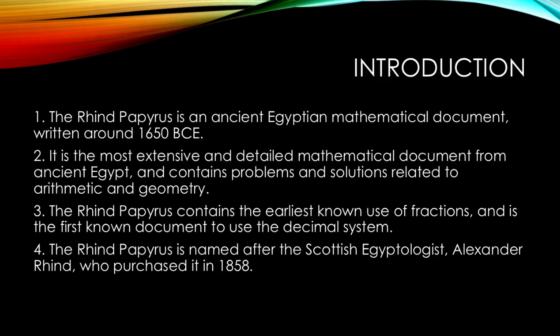As a reminder, the Rhine papyrus is an ancient Egyptian document from 1650 BCE and we are doing the geometry section problem 44.